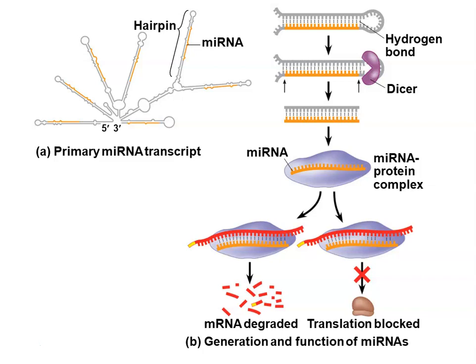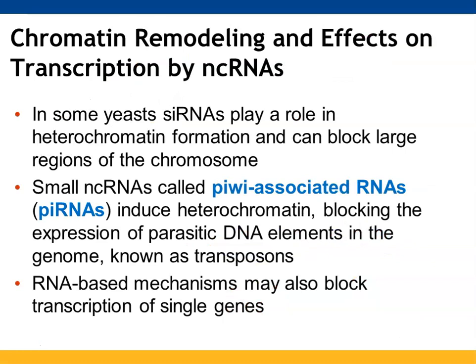An miRNA will hydrogen bond to make hairpins. The Dicer protein will come along and break it into smaller chunks, and now they work in concert to recognize mRNAs that seem foreign to the cell, preventing them from being translated or breaking them down altogether. Non-coding RNAs also have an impact on chromatin and therefore transcription. siRNAs can play a big role in heterochromatin formation and prevent chromosomes from being able to undergo gene expression.